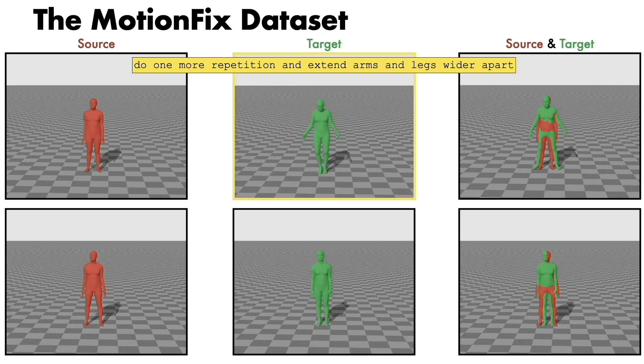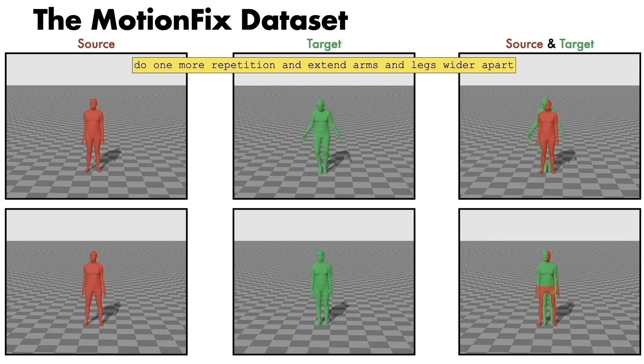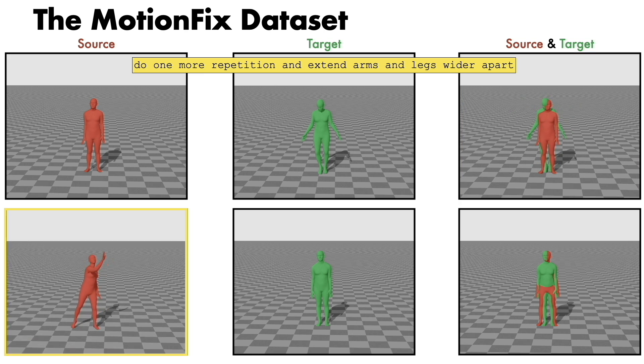Our dataset also includes speed and spatial edits of body parts. Here, for a throwing action, do the throw faster and catch from higher.